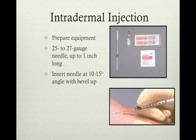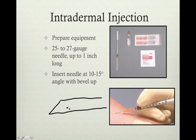Intradermal injection: prepare the equipment — a 25 to 27 gauge needle, which is a tiny needle, up to one inch long. Insert the needle at about 10 to 15 degrees with the bevel up. The bevel is the angled cut at the tip of the needle — we want that angle up so the cutting needle does the best job. Use as low an angle as possible to get the bevel just underneath the skin. Once you're just underneath the skin, inject the fluid and it will make a wheal in that area.